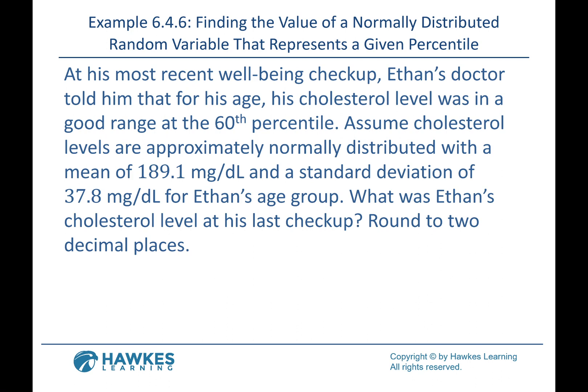At his most recent well-being checkup, Ethan's doctor told him that for his age, his cholesterol level was in a good range — at the 60th percentile. Assume cholesterol levels are approximately normally distributed with a mean of 189.1 and a standard deviation of 37.8 for Ethan's age group. We want to know what was Ethan's cholesterol level. A cholesterol level is not going to be a z, but we will use the z-tables. These are two-part problems: part one, find the z-value that matches up with the data value we're looking for.